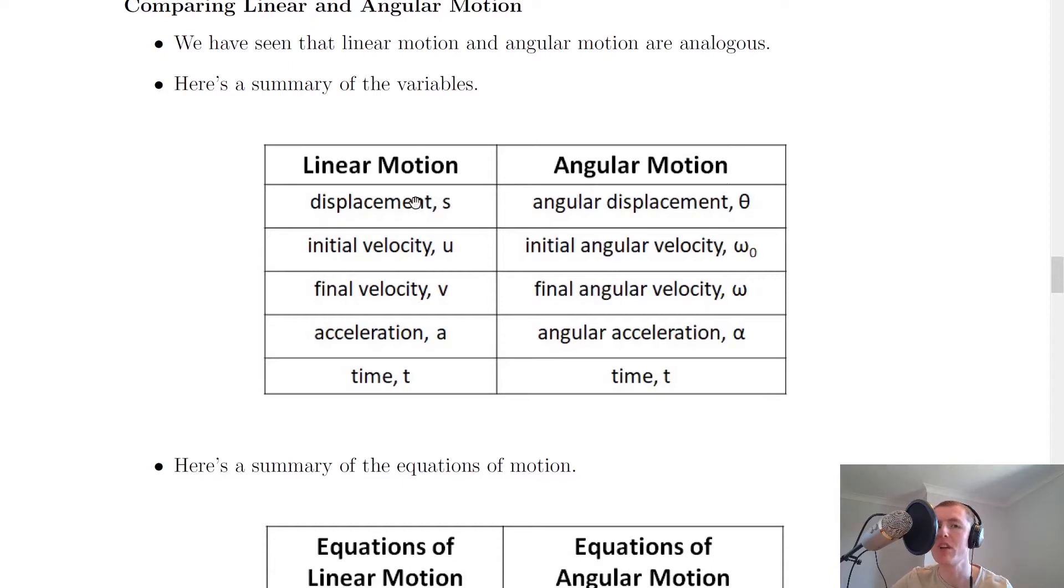So for linear motion we've got displacement s, but the angular form of that in angular motion is angular displacement theta. For linear motion we've got initial velocity u and angular motion initial angular velocity omega 0. We've then got final velocity v for linear motion compared to final angular velocity omega for angular motion. And then we've got acceleration a for linear motion versus angular acceleration alpha for angular motion. And lastly time t is the same in both because we don't have an angular form of time.